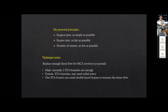My personal principle is that the surgical plan should be as simple as possible, the bypass time should be as fast as possible, and the number of anastomoses should be as few as possible. For the MCA territory blood flow replacement in male patients, normally two STA branches are enough to replace the whole MCA territory. For female patients, the STA is normally thinner, so double STA branch may not be enough and they may need radial artery transplantation. One STA branch can create a double barrel bypass to increase donor flow.